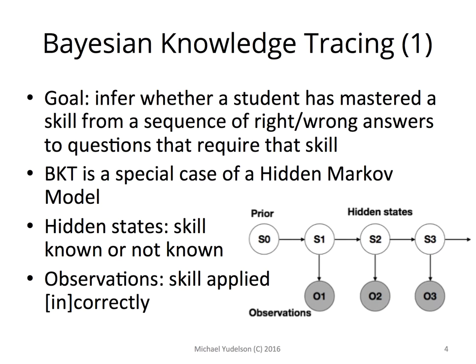A few words about Bayesian Knowledge Tracing, or BKT. BKT attempts to infer student mastery of a skill from a sequence of correct and incorrect attempts to apply the skill when solving a problem. BKT is a special case of a hidden Markov model. Hidden states are binary — known or unknown — and observations are binary as well — correct or incorrect.